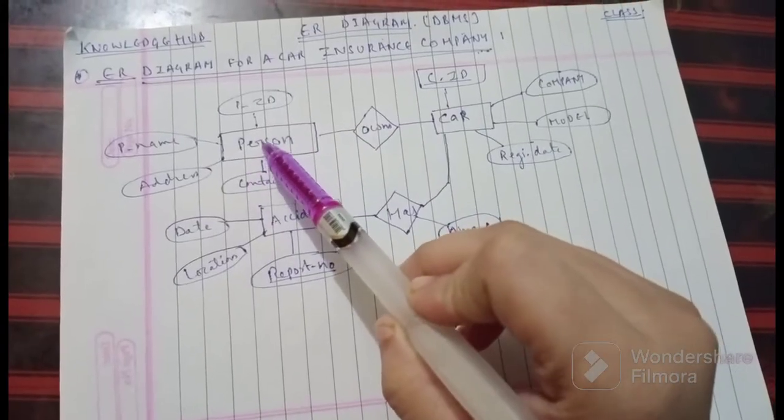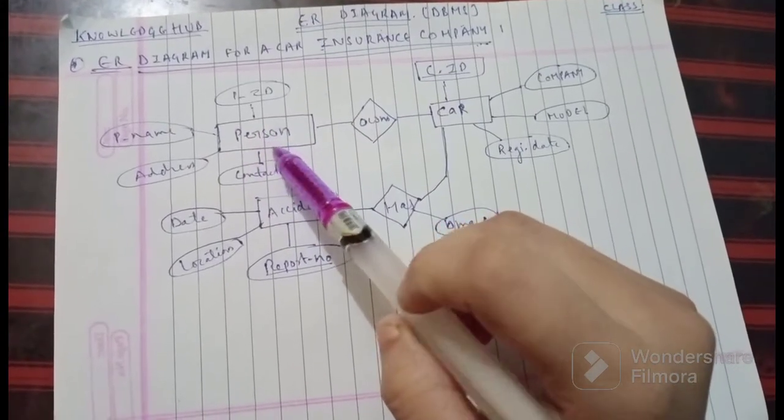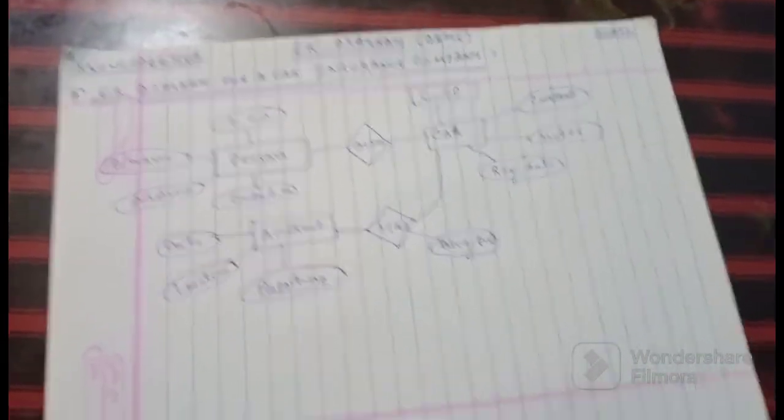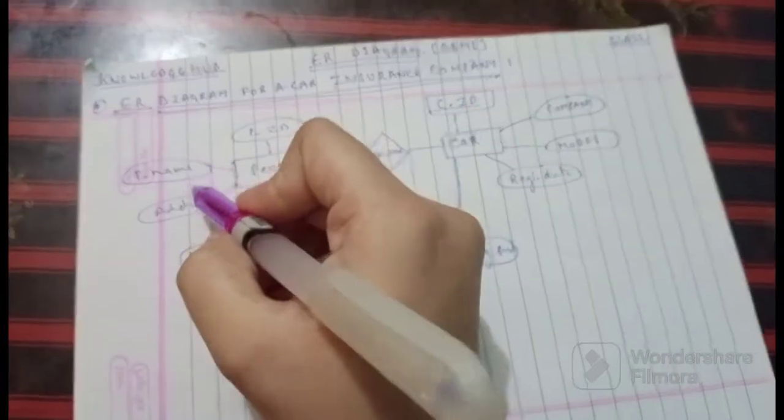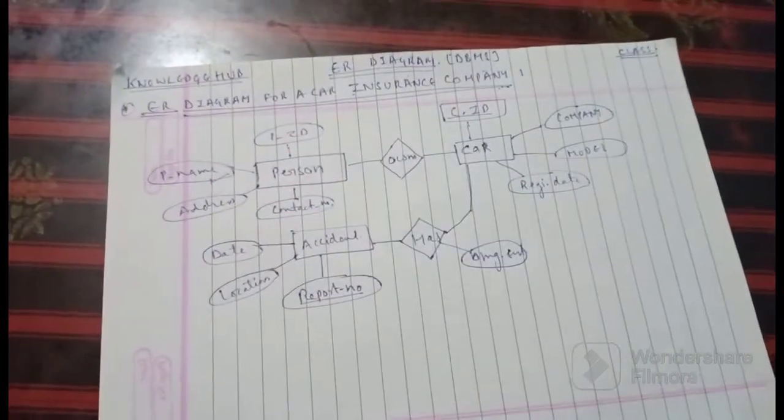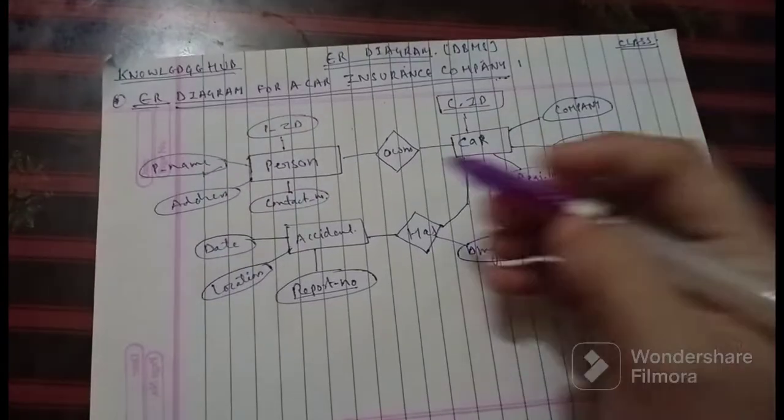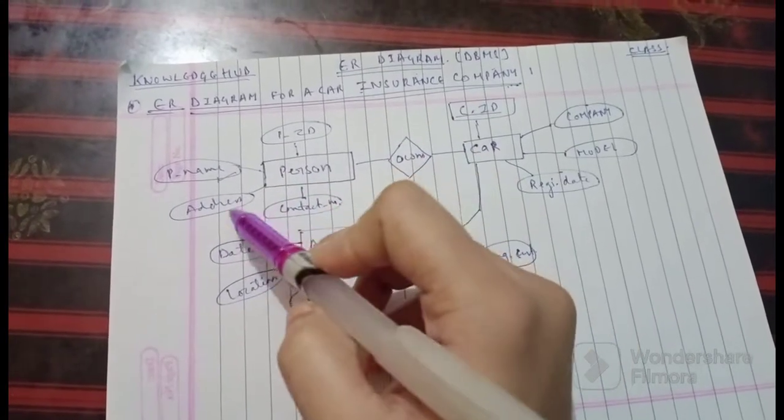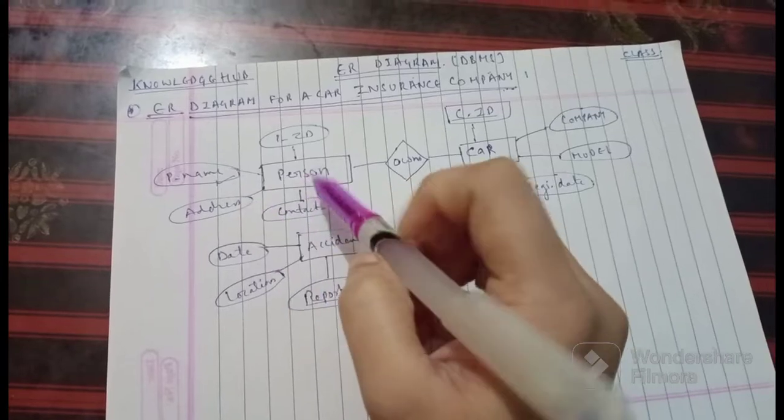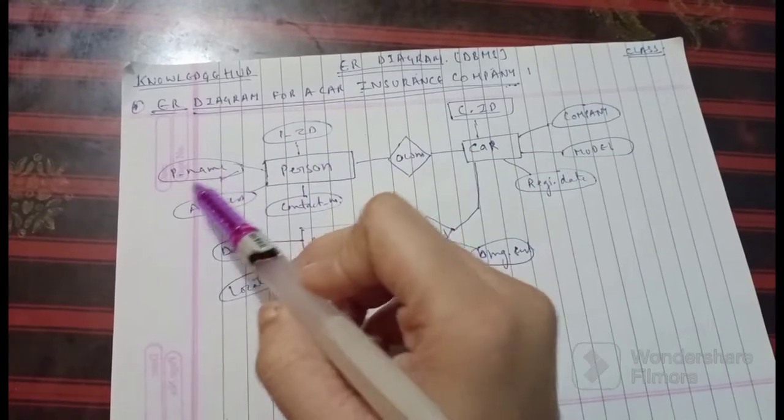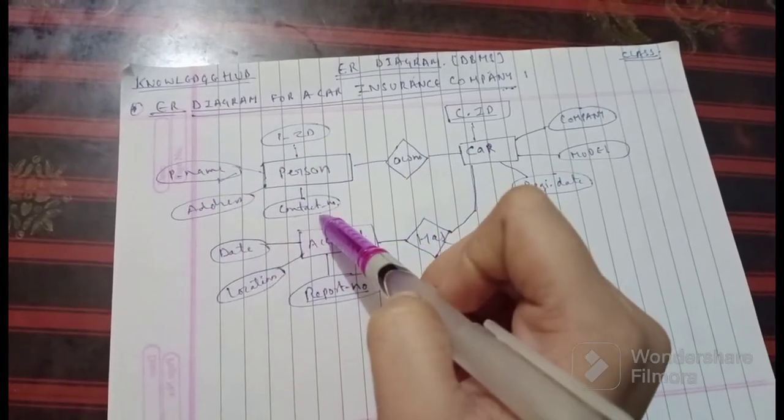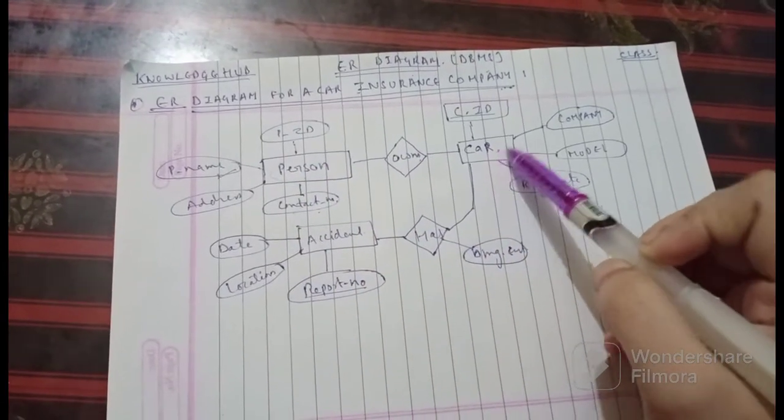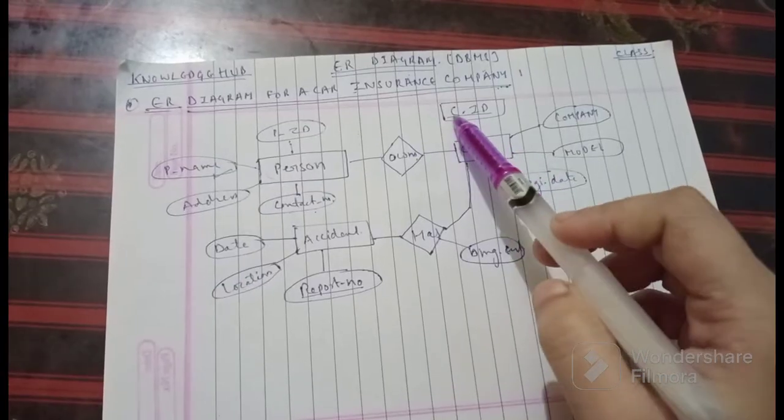First we have a person here. The person's requirements are: personal ID, that is the person ID, and then after that we have the personal name, what is the name of the person. Then we have the address, the person's address, and the contact number of a person. These were the requirements of a person: personal ID, personal name, address, and contact number.